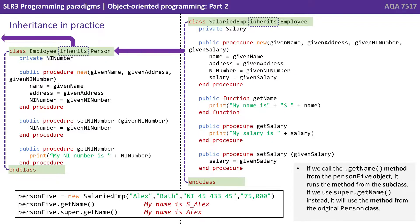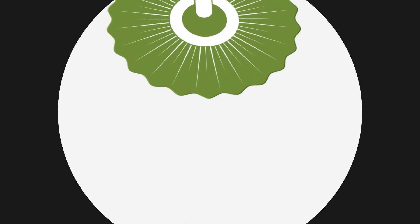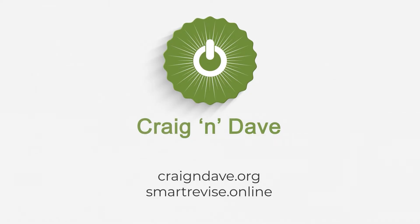If we call the dot getName method from the person5 object, it runs the method from the subclass. If we use super dot getName instead, it will use the method from the original person class. Having watched this video, you should be able to answer the following key questions: What is inheritance and how can it be used? And how can overriding be used in object-orientated programming?